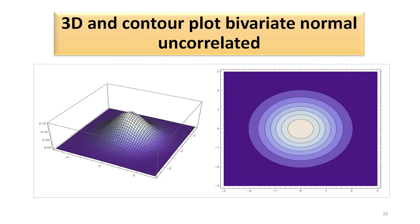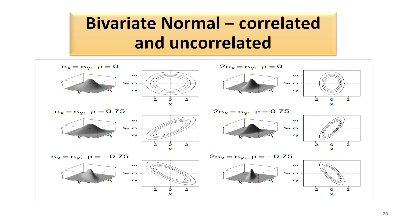Now let us look at the contour plot of a bivariate normal distribution where the variables involved are uncorrelated. As we see, the distribution belongs to the class of spherical distributions, which is very clear from the second graph. This diagram gives the bivariate normal uncorrelated and correlated cases and their contour plots. The first one in the upper left-hand corner takes sigma_x equal to sigma_y, but the correlation coefficient rho equal to 0. With mean vector equal to null, we find that the contour plot identifies the distribution as belonging to the class of spherical distributions.